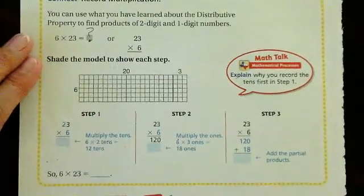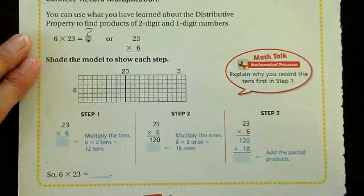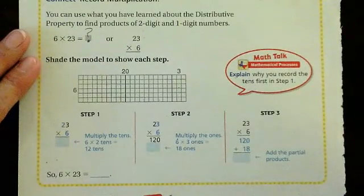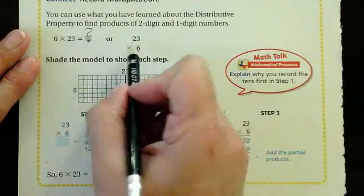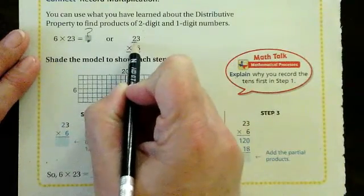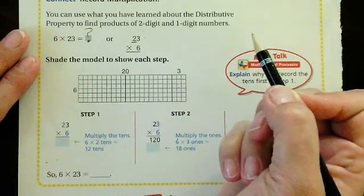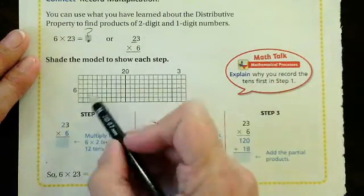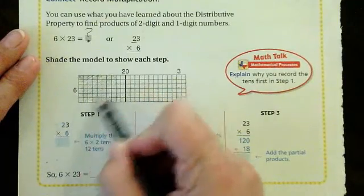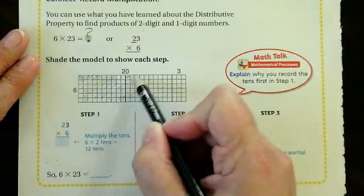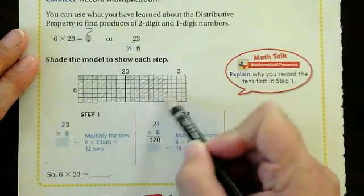So, first they want us to use the model. Shade the model to show each step. Okay, first I need to break this problem apart. So, how many tens do I have? I have two tens. Two times ten is twenty. So, I'm going to shade in the first ten and then I'm going to shade in the second ten.